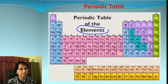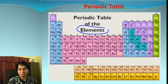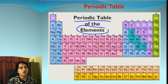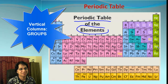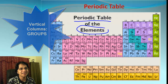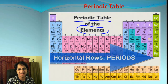If you look carefully, you can see it has elements organized in the form of a table. That's why we call it a periodic table. It also has vertical columns, which we call groups, and horizontal lines, which we call periods.